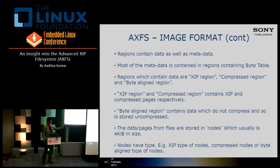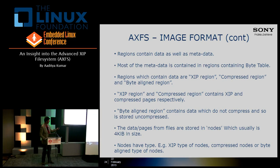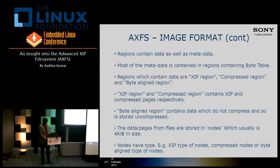Within a region, data is stored in chunks called nodes, usually four kilobytes in size — these are basically the pages from files. If a node is XIP it is stored as-is; if compressed, a few blocks of data are compressed together. Nodes in a region have types: either XIP, compressed, or byte-aligned.